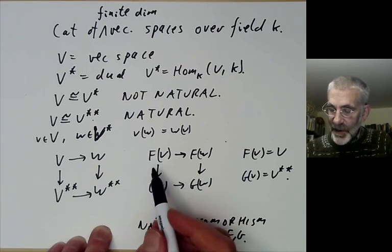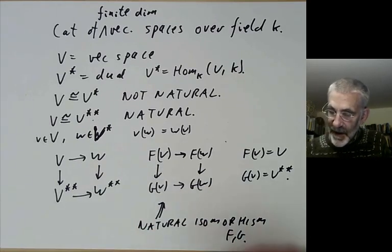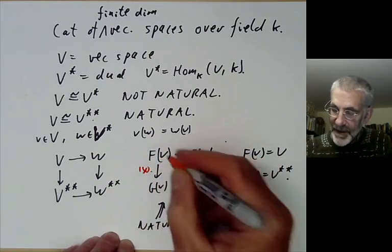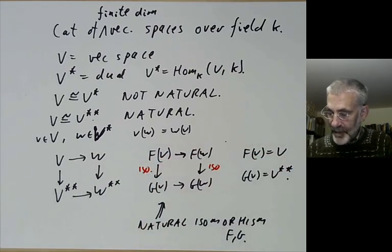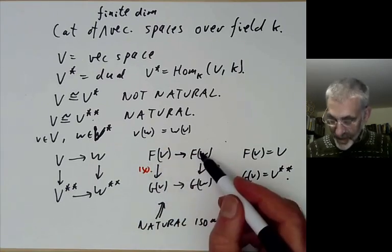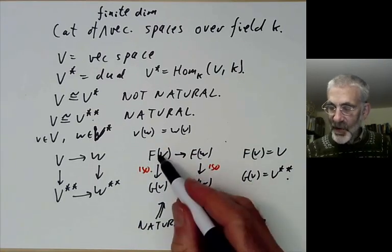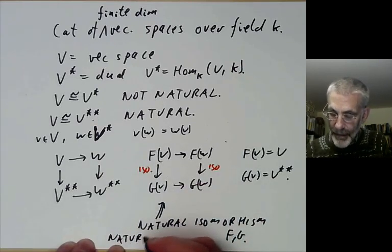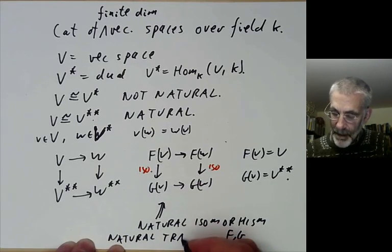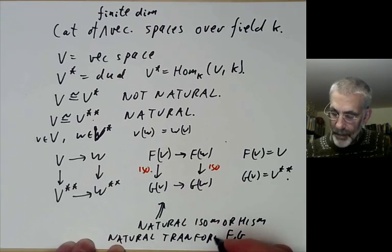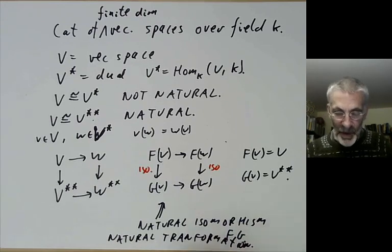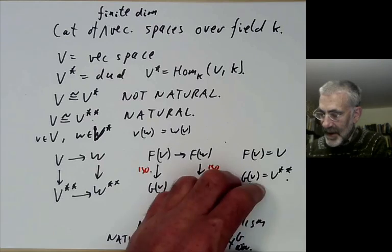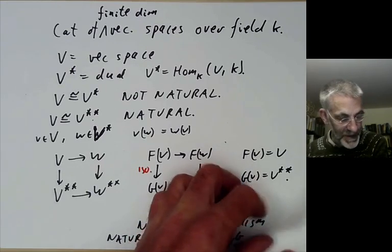What this means is that the maps in the diagram are isomorphisms and this square commutes. If these maps aren't necessarily isomorphisms but just morphisms, we call this a natural transformation. So a natural isomorphism is a special case of a natural transformation where the maps are isomorphisms.